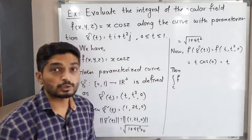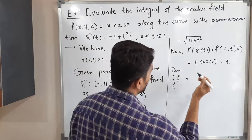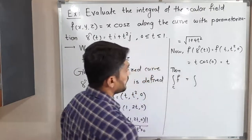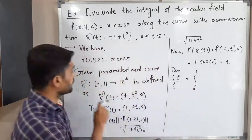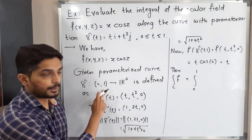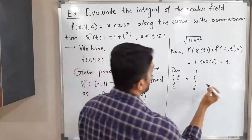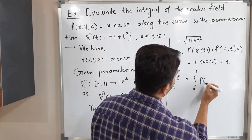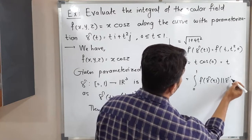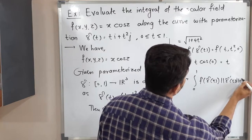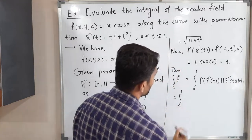Now let us set up the integral. The line integral of f over curve C, whose parameterization is γ, is by definition: ∫₀¹ f(γ(t))·||γ'(t)|| dt, with limits 0 to 1 since the domain of gamma is [0, 1].